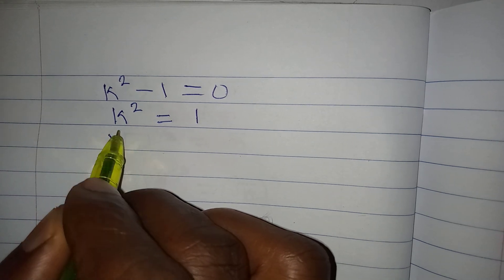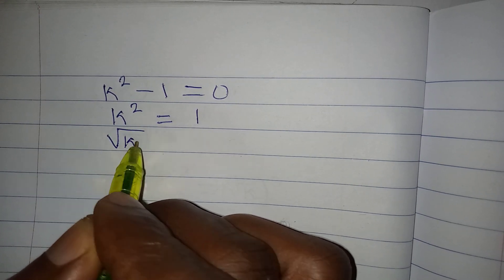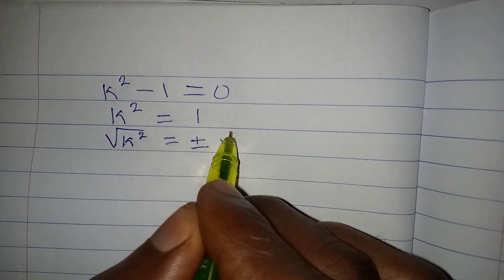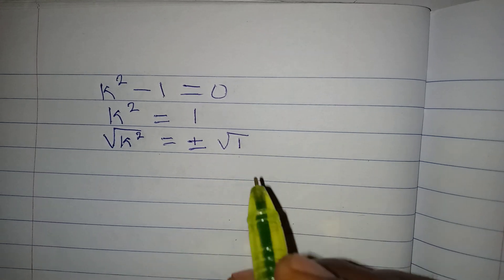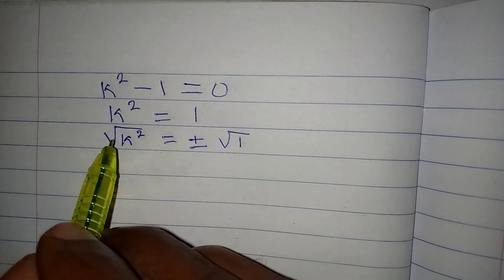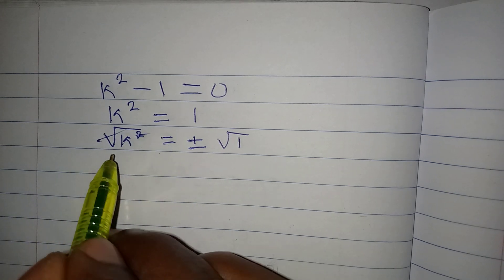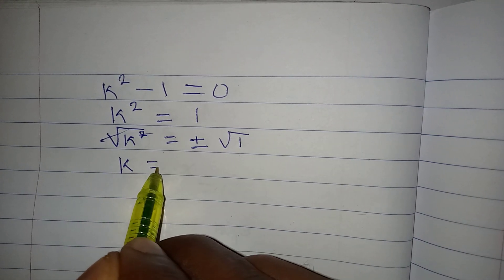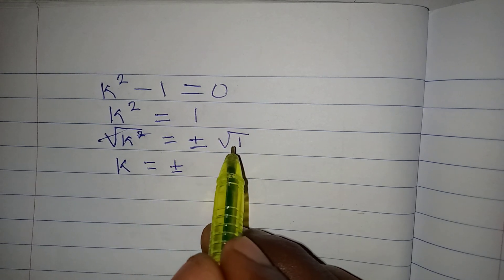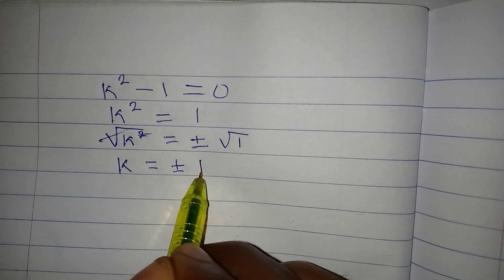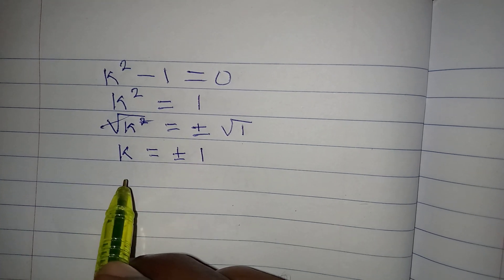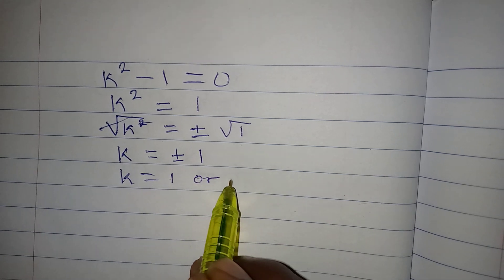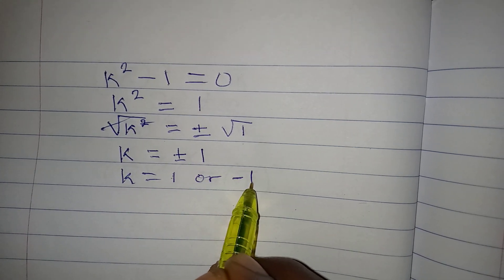Taking the square root of k squared gives plus or minus the square root of 1. The square root and the square cancel, so k equals plus or minus the square root of 1. The square root of 1 is 1, so k equals positive 1 or negative 1.